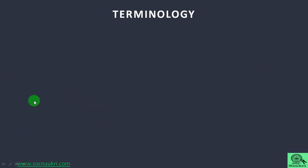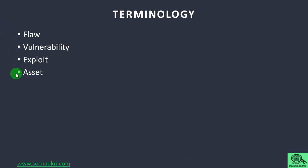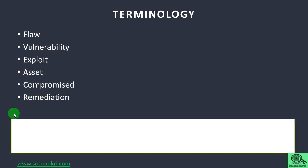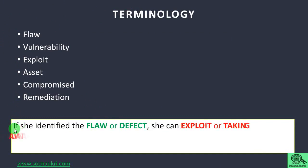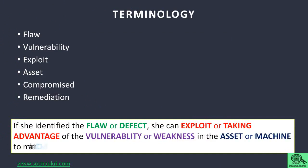Before I start, I would like to go through some terminologies used in information security, like flaw, vulnerability, exploit, asset, compromise, and remediation. Let's understand the meaning of these terms in a single sentence: if someone identified the flaw or defect, they can exploit or take advantage of a vulnerability or weakness in an asset or machine to make it compromised or hacked. Remediation is referred to as a prevention measure from the attack. Isn't it simple?